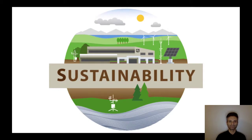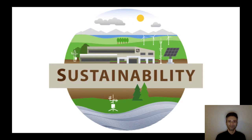Welcome to part two of lecture ten. In part one we talked about what human beings do to animals and I brought up some ethical concerns. For example, human beings bring into existence billions and billions of animals that otherwise would not exist, and the sheer number of animals causes greater environmental degradation because these animals require antibiotics, pesticides, and they pollute the waters, soil, and contribute to climate change.